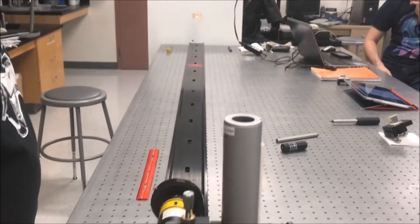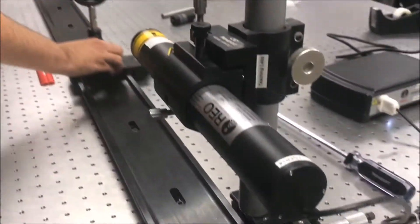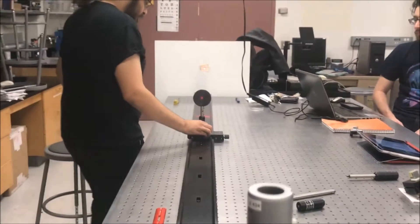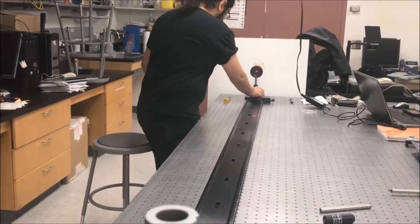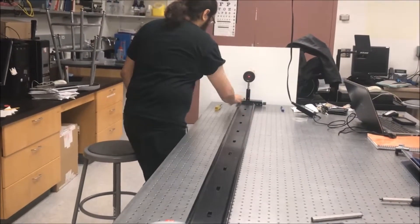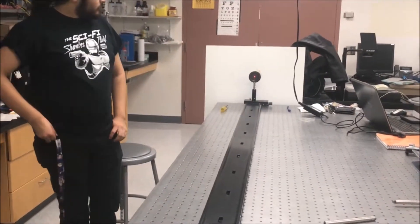This is our aligned HeNe laser in our laser mount. We have the red HeNe laser here. You can see as the pinhole goes all the way down to the end of the optical rail, our beam keeps coming through, so it is parallel to the optical rail, and also it is centered because of the post holder and the iris mounting.